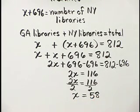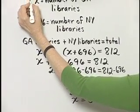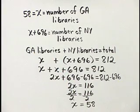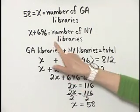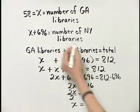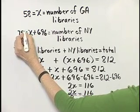Now the question is, what does 58 mean? We are now interpreting. Remember, 58 is X, so that is the number of libraries in Georgia. So how do I calculate the number of public libraries in New York? I take 58 and I add 696 to it. And 58 plus 696, that is 754.